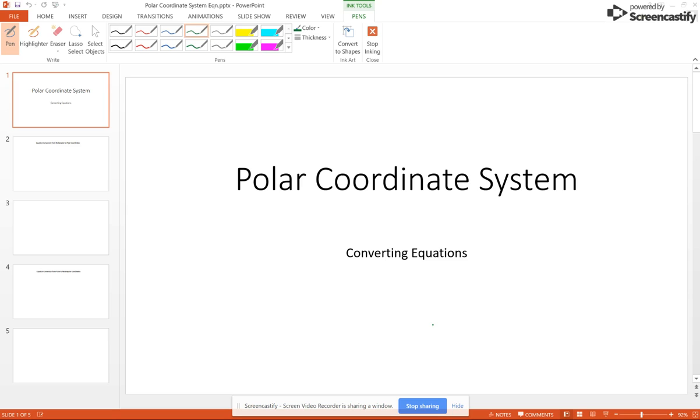Polar coordinate system – converting equations. We're going to convert between rectangular and polar equations. We'll be using the same formulas: X is R cosine theta, Y is R sine theta, X squared plus Y squared equals R squared, and tangent theta equals Y over X.